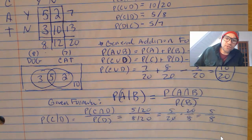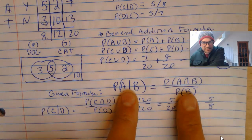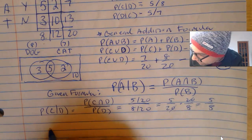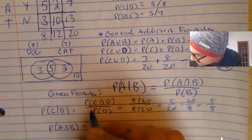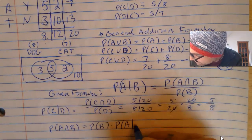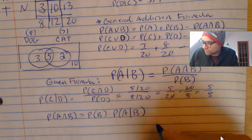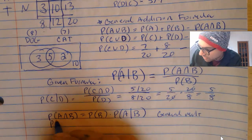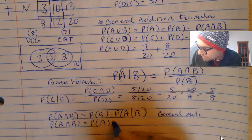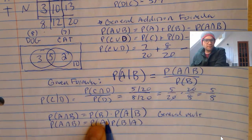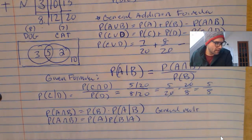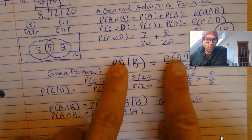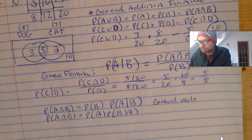A quick manipulation: if you multiply both sides of the conditional formula by P(B), you get the general multiplication rule — P(A and B) equals P(B) times P(A|B). And since A and B is commutative, you can also write it the other way. You can use this to find the probability of A and B, and it will work for any of these examples.